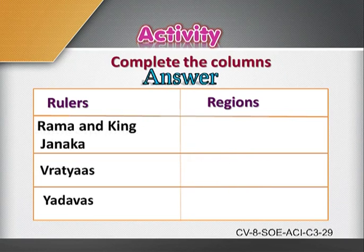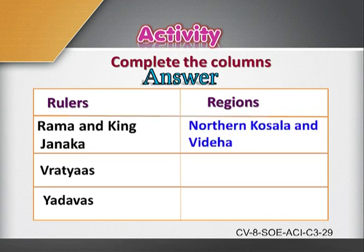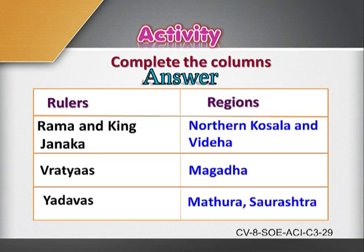The answers: Rama and King Janaka ruled Northern Kosala and Videha. The second — Vratyas — ruled Magadha. The third — Yadavas — ruled Mathura and Saurashtra. Note down these points in your notebook.